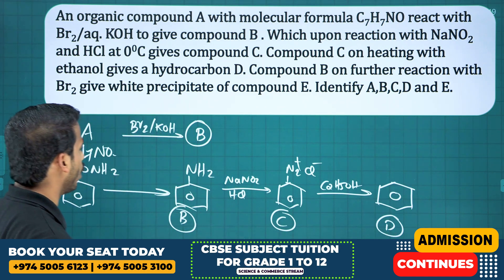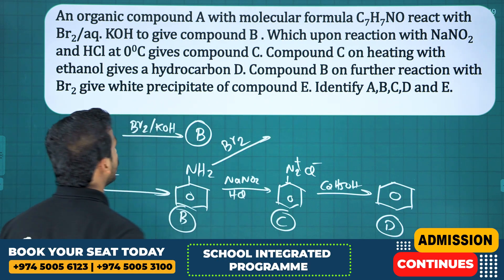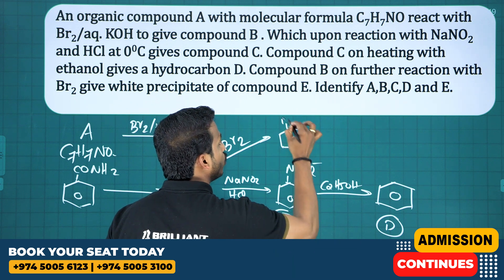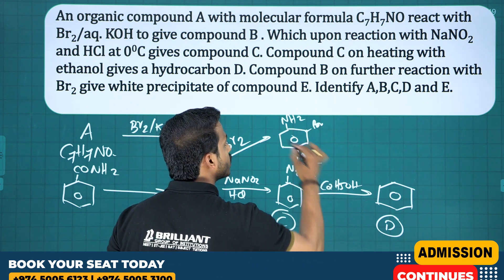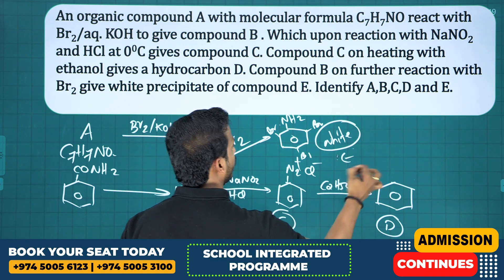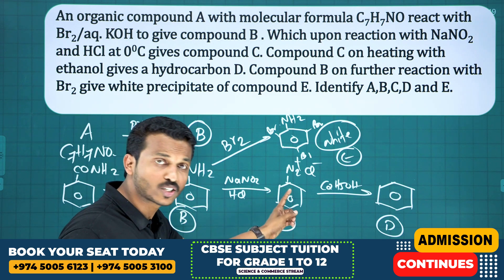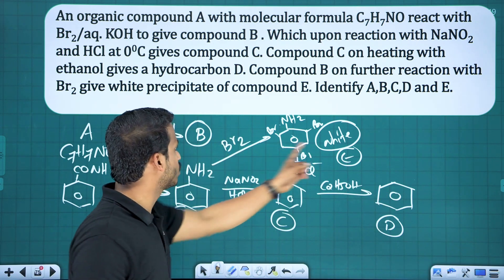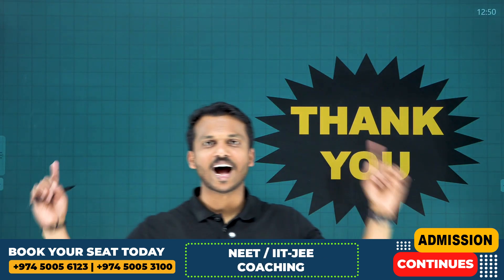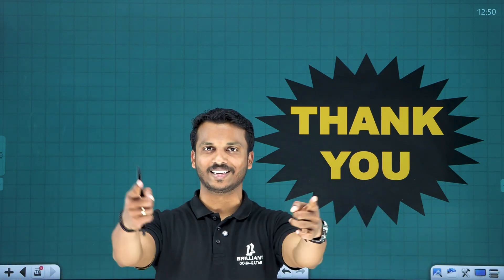Diazonium salt C on heating with ethanol gives benzene — compound D. Compound B (aniline) on further reaction with bromine gives a white precipitate: 2,4,6-tribromoaniline — compound E. Summary: A is benzamide, B is aniline, C is benzene diazonium chloride, D is benzene, E is 2,4,6-tribromoaniline. Practice well and make all the reactions easier — thank you!